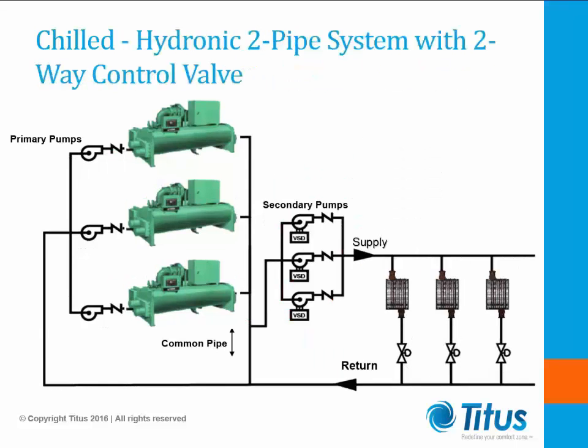Two-way valves are used in a variable flow system. As each two-way valve adjusts the flow of the chilled water through the coil to satisfy the existing load, the secondary or distribution pumps respond by regulating the amount of chilled water delivered. Water flows through the bypass in either direction as needed in order to balance the system. You may have heard this system called a decoupled system.